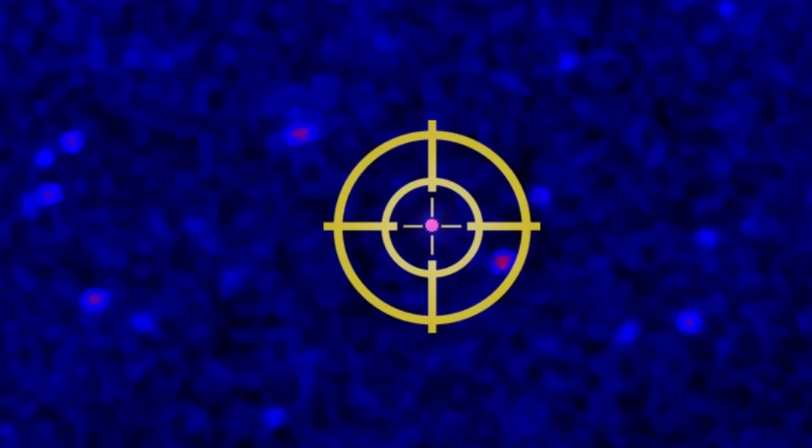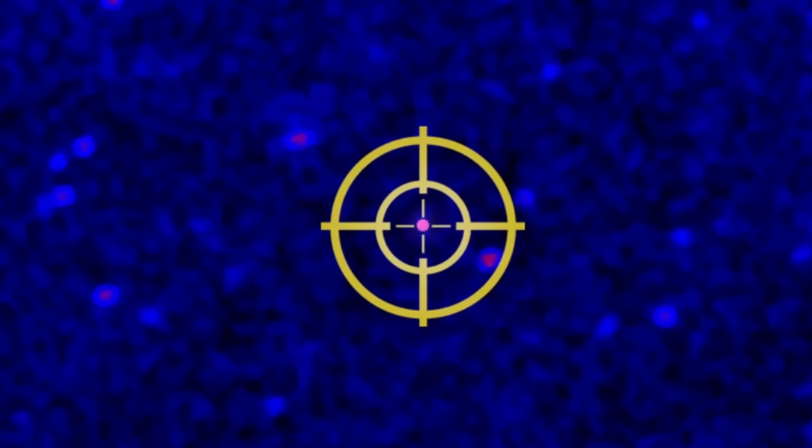And then there is this object, PSR J0952-0607, that's classified as a black widow pulsar, or basically a pulsar slowly destroying its partner. I believe we've discussed this in one of the previous videos somewhere in the description. That spins 707 times per second, so just a little bit slower than these two other objects but much faster than anything else. So these three objects, along with previous discoveries, basically present us with a kind of a limit for the rotation of the neutron star.